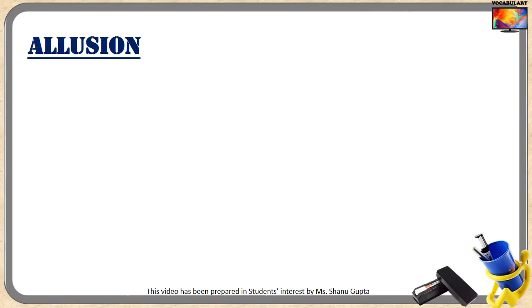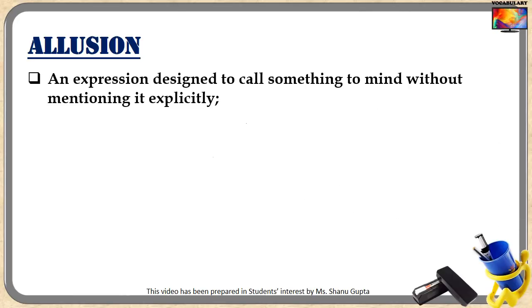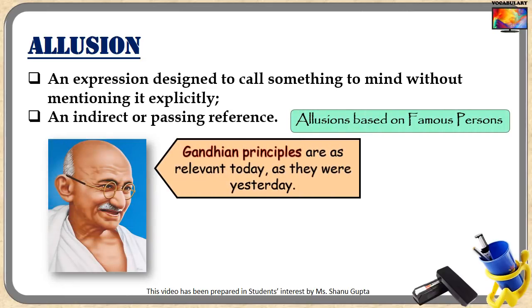The very first figure of speech, and one of the most commonly used ones, is Allusion. Allusion is an expression designed to call something to mind without mentioning it explicitly — it's an indirect or passing reference. For instance, when I say 'Gandhian principles are as relevant today as they were yesterday,' I am making an allusion to Mahatma Gandhi, and all that he stood for springs up in the reader's or listener's mind even though I did not explicitly mention it.